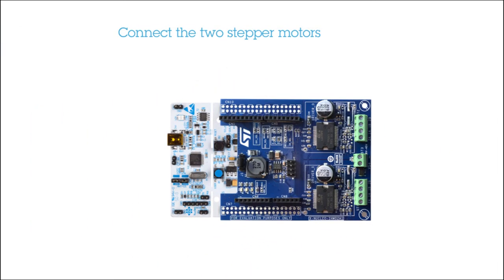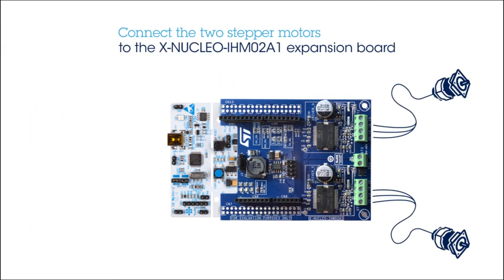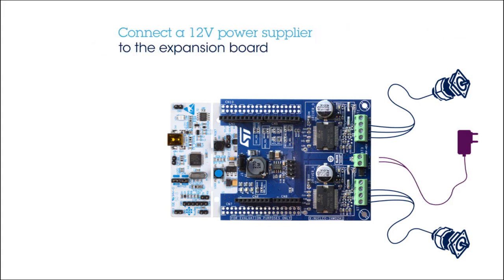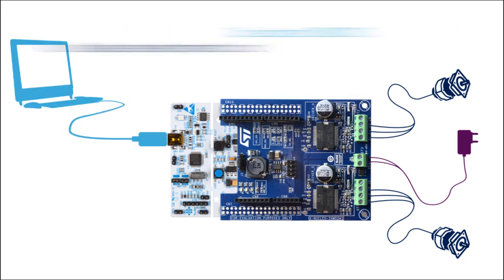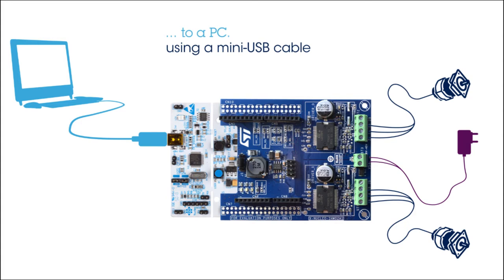Connect the two stepper motors to the expansion board, then connect a low-voltage supply — in this case we use a 12-volt battery. Then you can connect the STM32 Nucleo board to a PC using a mini USB cable, and then you are ready to power on.